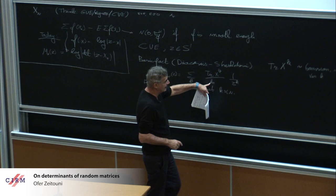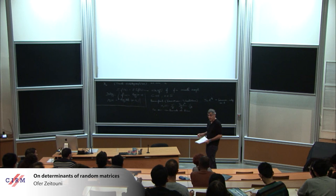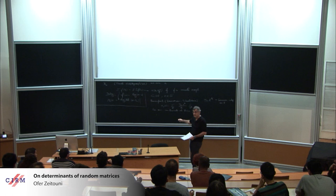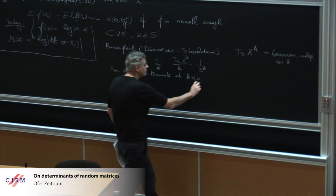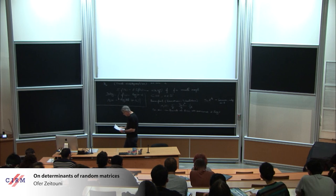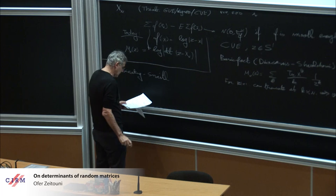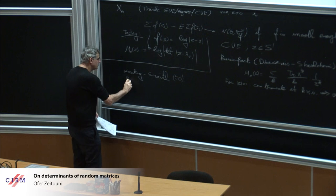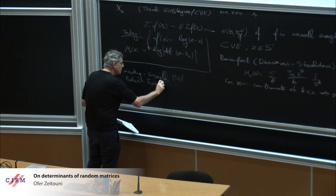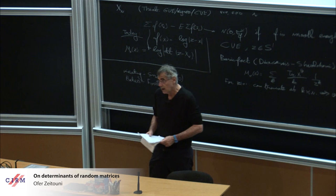If z is on the unit circle, you can truncate this series at k about n. This gives CLT. You get a sum of independent variables with variance 1 over k. Since you truncate at n, this gives a variance of order log n with a constant you can explicitly compute.